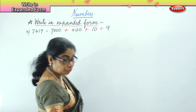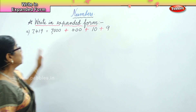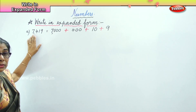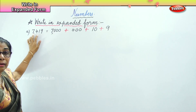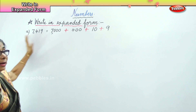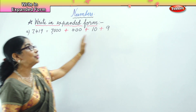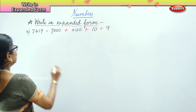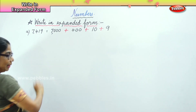So like this, you have to expand: how many thousands, hundreds, how many tens, how many ones. 10 plus 9. And that is called expanded form. So let's do another number now.